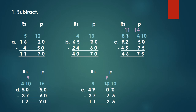Example E. 49 rupees 0 paise minus 37 rupees 75 paise. Children, we cannot subtract 5 from 0, so we borrow. The next number is also 0, so we borrow from the next. The 9 becomes 8 and the 0 becomes 10. Now from 10, we borrow. 10 becomes 9 and the 0 becomes 10. So 10 minus 5 equals 5. 9 minus 7 equals 2. 8 minus 7 equals 1. And 4 minus 3 equals 1. So the answer is 11 rupees 25 paise.